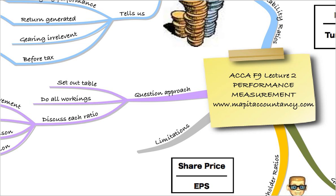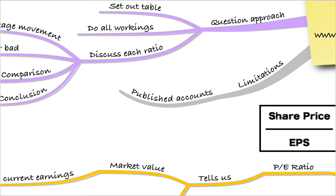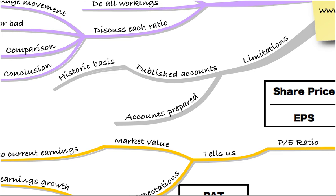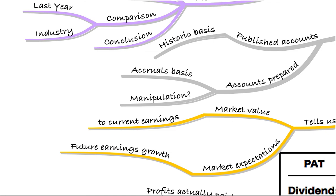Remember that there are limitations to these ratios when thinking about measuring performance. Firstly, published accounts — we'll usually be using these to do the calculations — are on a historic basis. You're probably looking at results of something that happened maybe a year and a half ago, so it may not be relevant at this point in time. Also remember that accounts are prepared on an accrual basis, and that means there can be manipulation of profit figures. Those are two limitations to using ratios to assess the performance of a business.